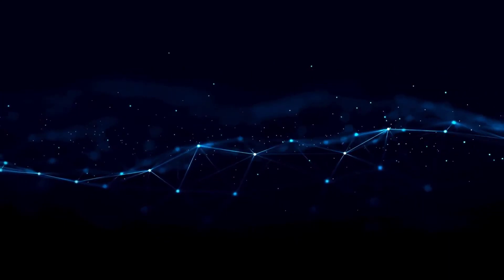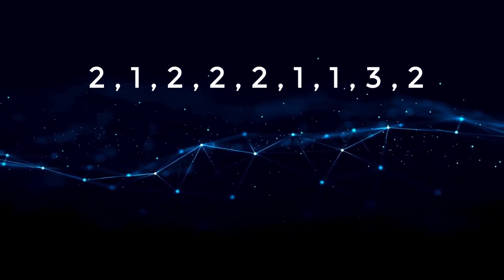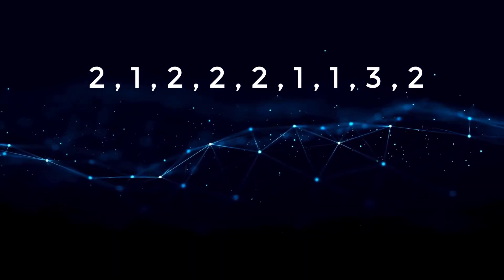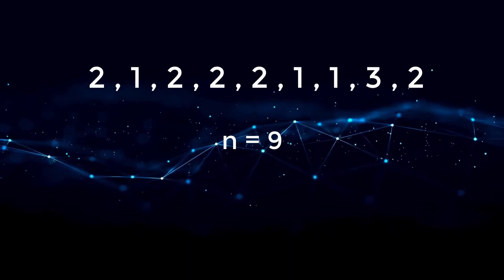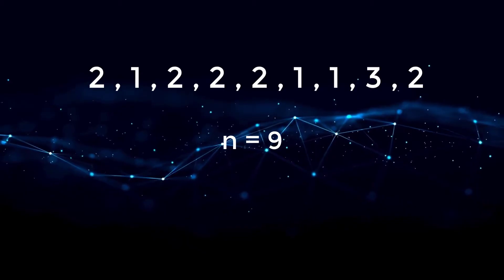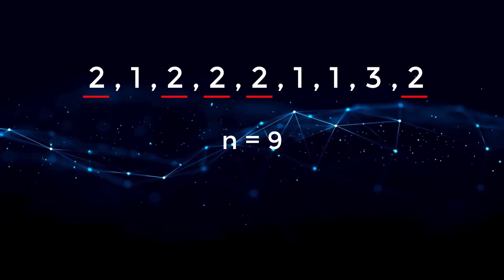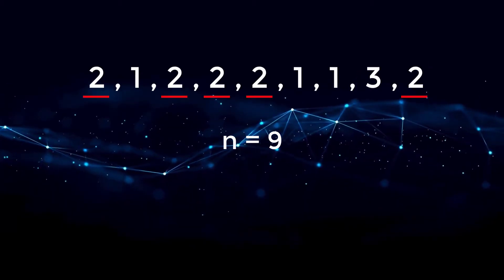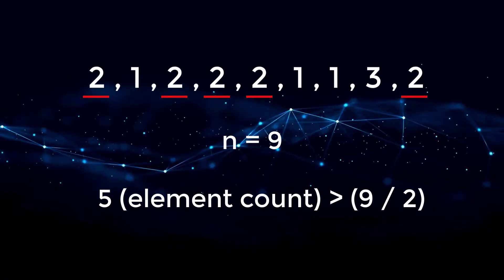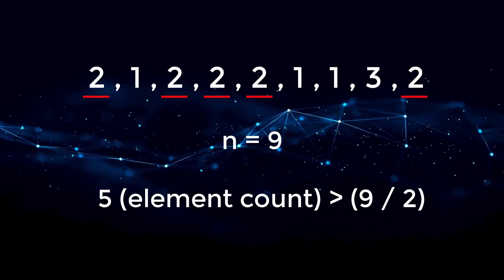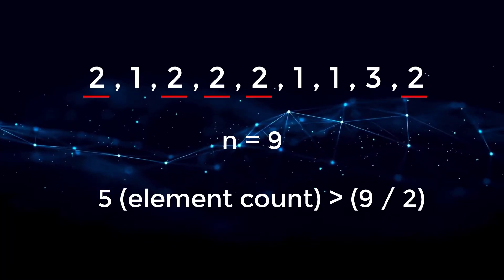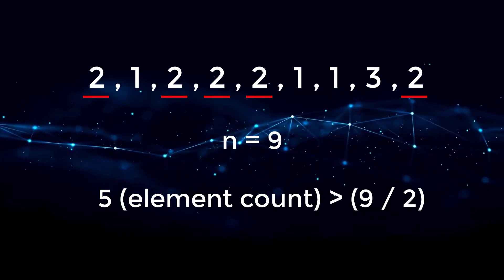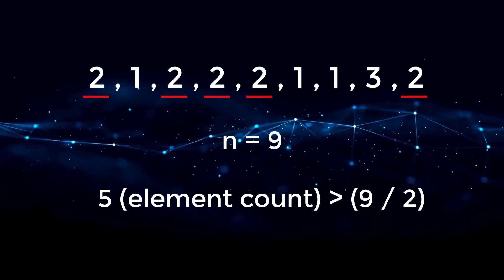So let's say we have the following array. The majority element in this case is two, since the length of our array is nine, and there are a total of five number twos. So n over two would be four, and five is obviously greater than four — so that is our majority element.